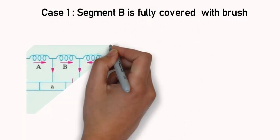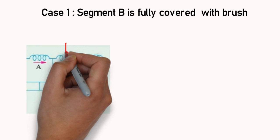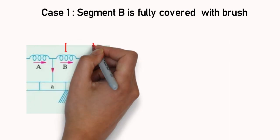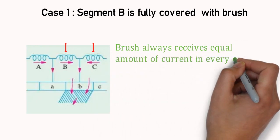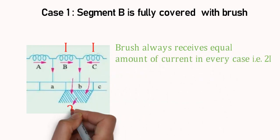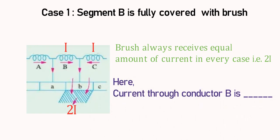Commutator segment B is fully covered with brush. Suppose, current from coil B and coil C is I. So, total 2I amount of current will pass through brush. Here, brush will receive current from commutator segment B only. Current passing through coil B is I.